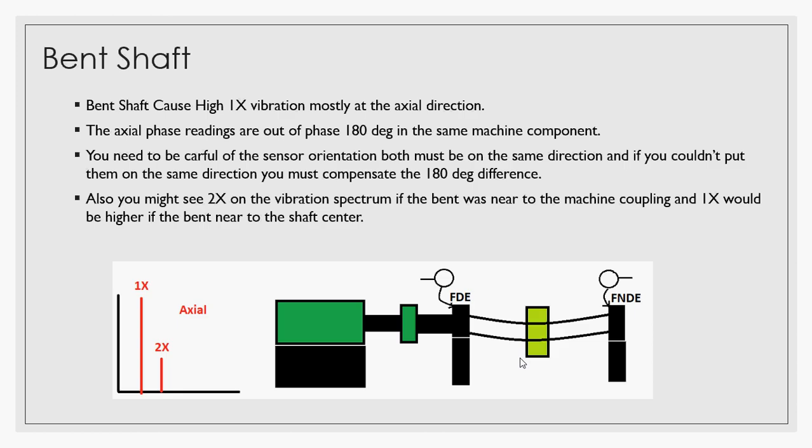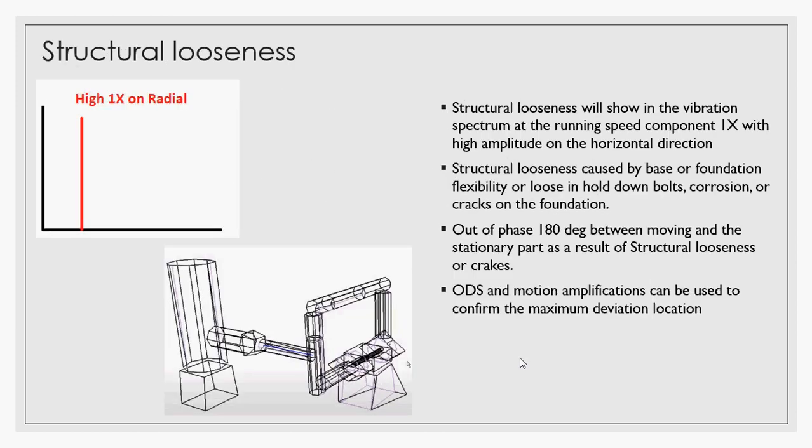You might see 2X on the vibration spectrum if the bend was more near to the machine coupling, and 1X would be higher if the bend is near to the shaft center. Also, you can see high 1X in structural looseness or resonance.